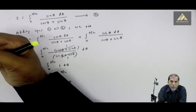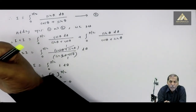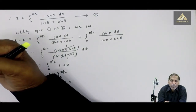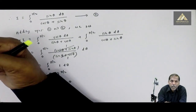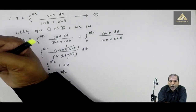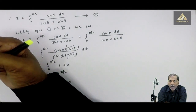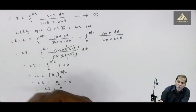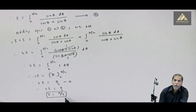So in this way, question number 3 is complete. The question was integral from 0 to a of 1 dx upon x plus square root of a square minus x square, and the answer we obtained is pi upon 4.